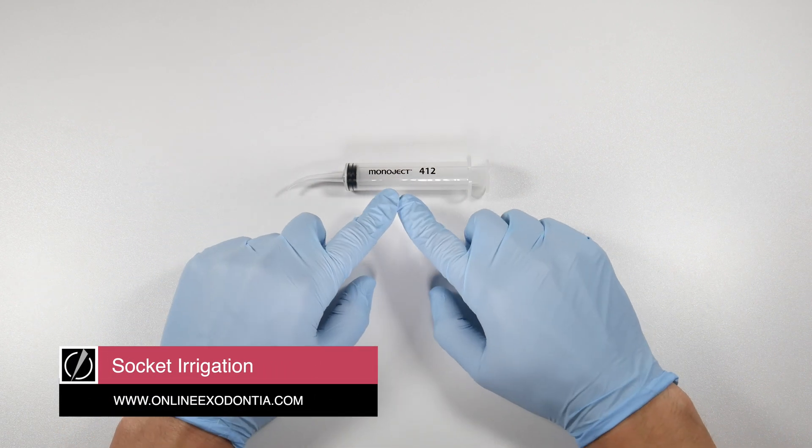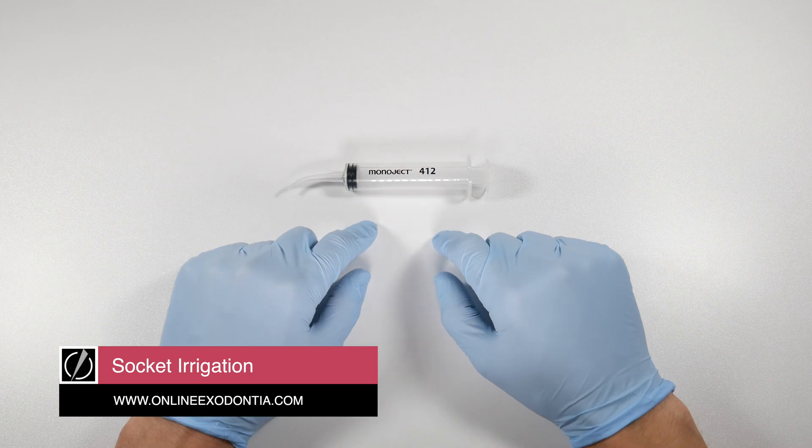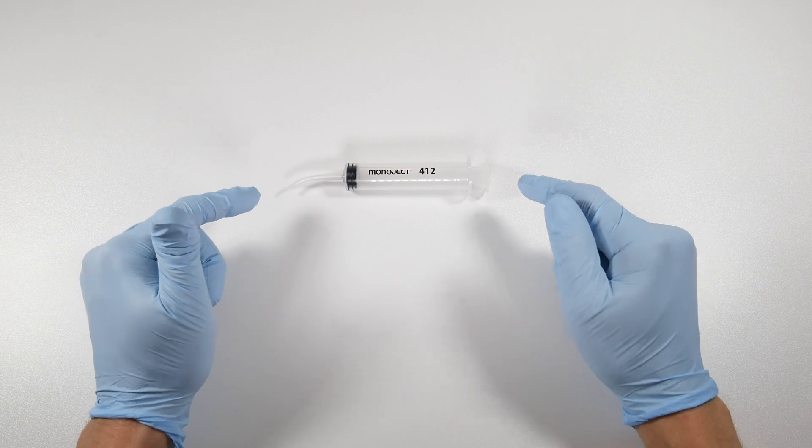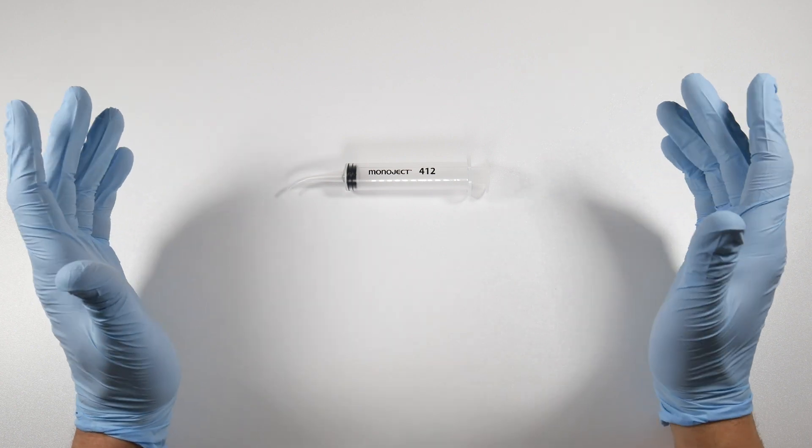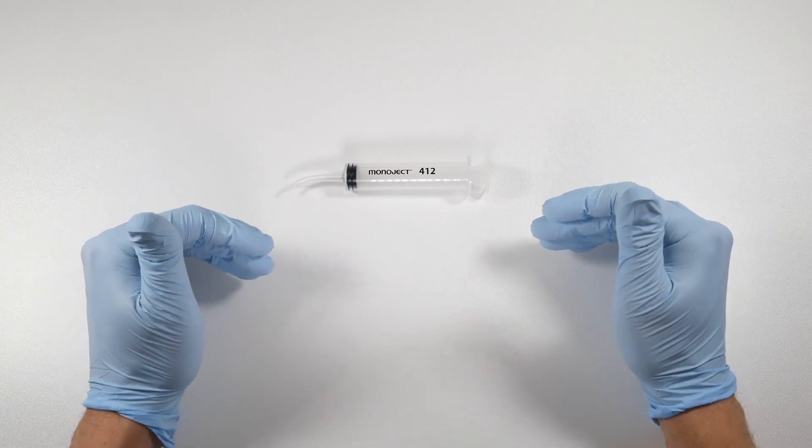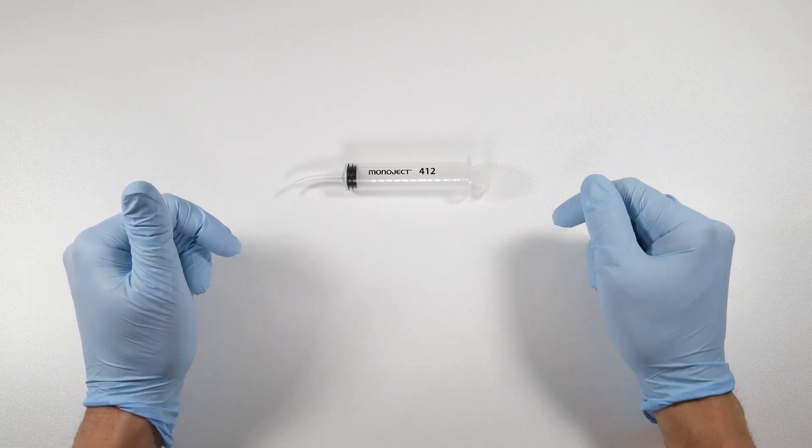In this video we're going to talk about the Monoject 412 syringe. This is what we carry in our office. I assume that most of you have had some exposure to these or have them in your practice. If not, you really want to make sure that you look at getting some of these because they have great uses and they're handy items to have around.